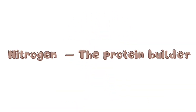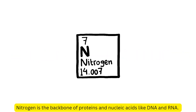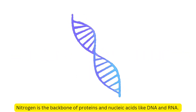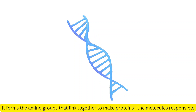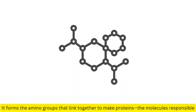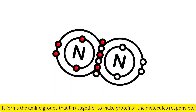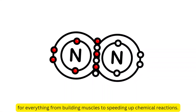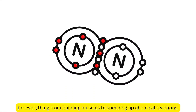Nitrogen — the protein builder. Nitrogen is the backbone of proteins and nucleic acids like DNA and RNA. It forms the amino groups that link together to make proteins, the molecules responsible for everything from building muscles to speeding up chemical reactions.